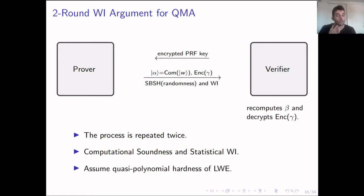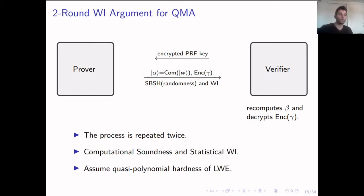Since we use SBSH commitments, we achieve statistical WI, but we get computational soundness, so this is a WI argument, not a proof. There is an exponential loss due to the sometimes binding commitments, so we have to assume quasi-polynomial hardness over the WI. Since this protocol is a building block for all our following constructions, all our constructions must assume quasi-polynomial hardness.